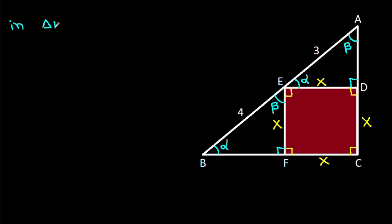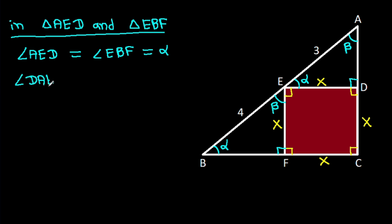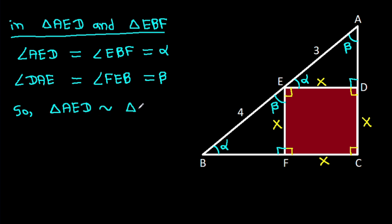In triangle AED and triangle EBF, we have angle AED equal to angle EBF, that is alpha, and angle DAE equal to angle FEB, that is beta. So triangle AED is similar to triangle EBF.